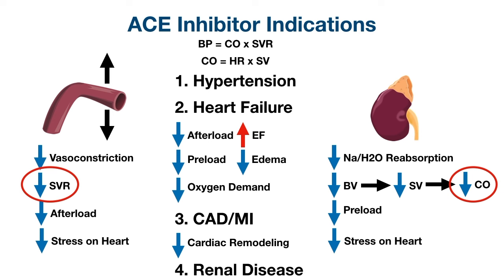Finally, ACE inhibitors can be used to slow the progression of renal disease from chronic diabetes or hypertension — called diabetic nephropathy and hypertensive nephropathy. Chronic hypertension or diabetes can progressively damage the kidneys, leading to proteinuria, worsening renal function, and potentially chronic kidney disease. Inhibiting the renin-angiotensin-aldosterone system with ACE inhibitors has been shown to protect the kidneys and slow the progression of renal disease.